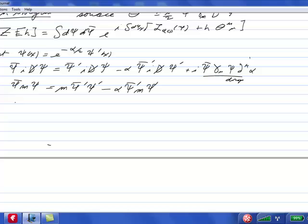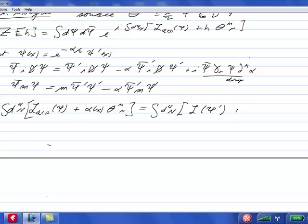So this tells us that if we have the integral d4x Lagrangian of QCD with psi in it plus here's alpha of x theta mu mu, this is going to be used in the relation below is then the integral d4x of psi prime plus alpha psi bar m psi. So this is the invariance of the Lagrangian.